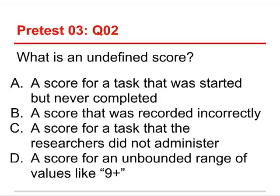Question two: what is an undefined score? The choices are the score for a task that was started but never completed, a score that was recorded incorrectly, a score for a task that the researchers did not administer, or a score for an unbounded range of values like 9+. The answer is A — a score for a task that was started but never completed, like the DNF or 'did not finish' in a race. It's undefined because they participated and started but didn't finish, or it became impossible. That data can still be very important in a study, so you don't want to just throw it out, but it is problematic because you can't use it for the mean. That is an undefined score.